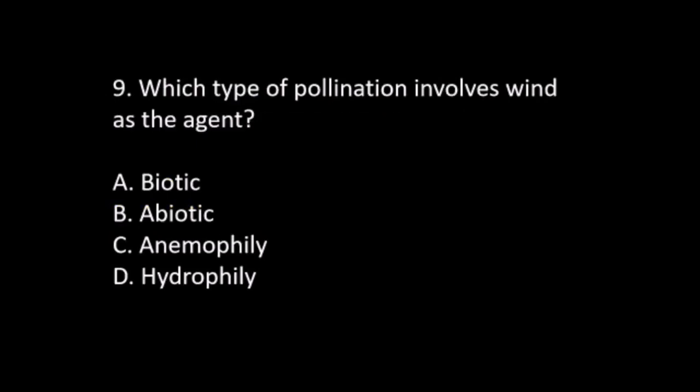Number 9. Which type of pollination involves wind as the agent? A. Biotic. B. Abiotic. C. Anomophily. D. Hydrophily. The answer is C. Anomophily.